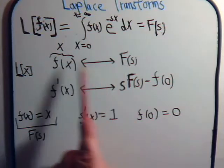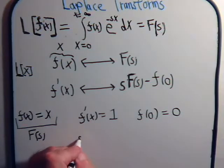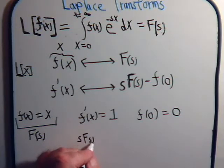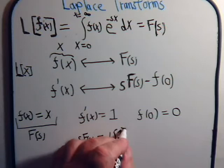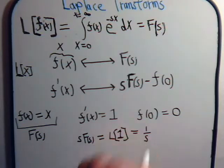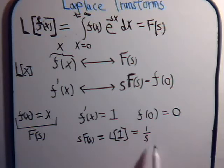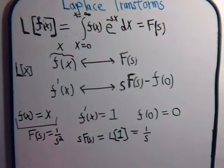And f(s) is our Laplace transform of just x. So the Laplace transform of f'(x) is just s times f(s), and that has to be equal to the Laplace transform of 1. And we know what that is — that's equal to 1/s. So f(s), which is what we want to know, is equal to 1/s². And so there we found it: the Laplace transform of x is just 1/s².